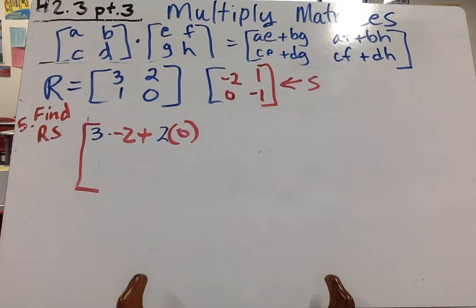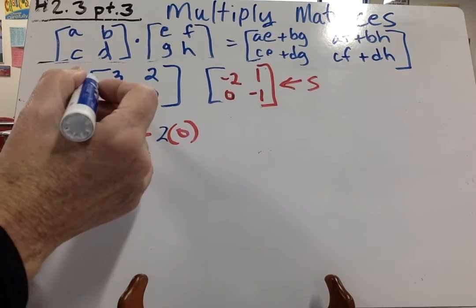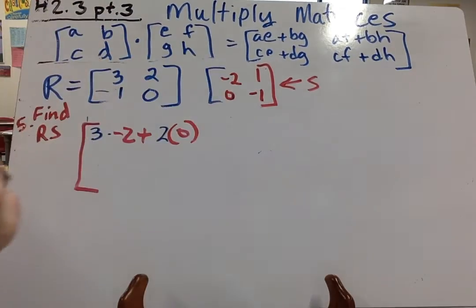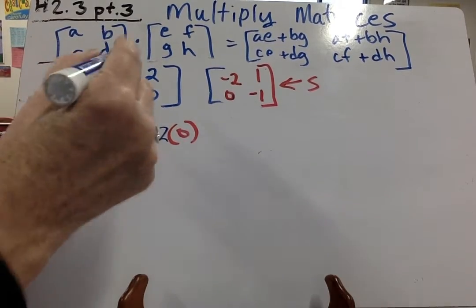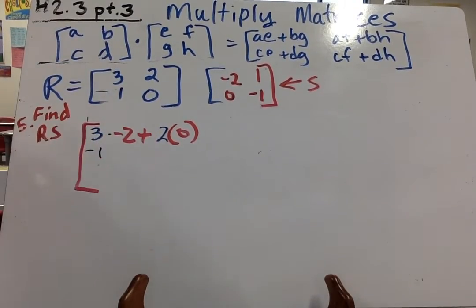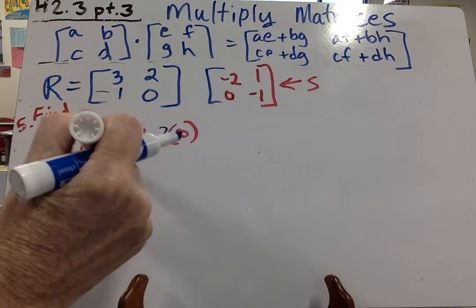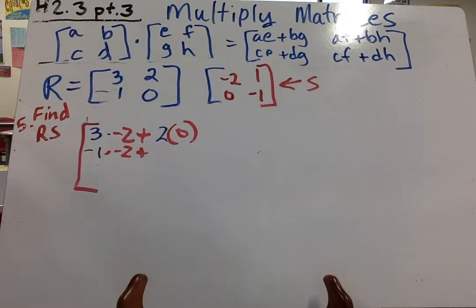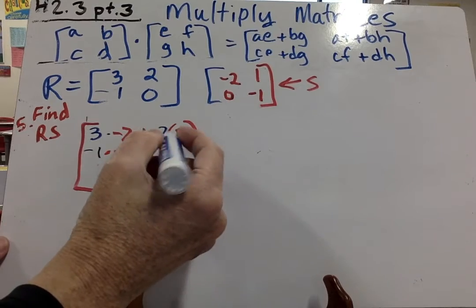Then our next one is going to go negative 1. I think this should be a negative 1 right here. I made a mistake on there. So 3 times negative 2 times 2 times 0. Then we go negative 1 times negative 2 plus 0 times 0.